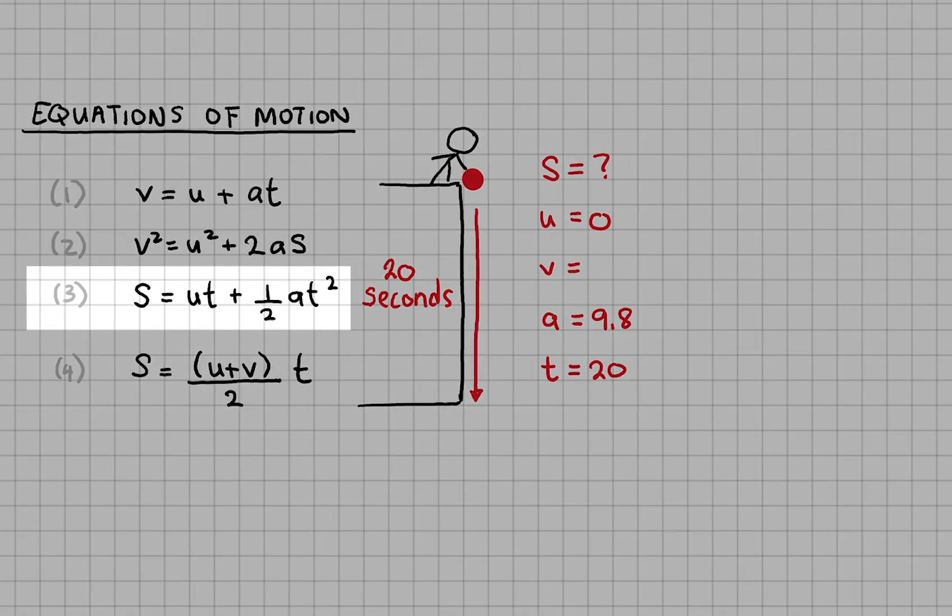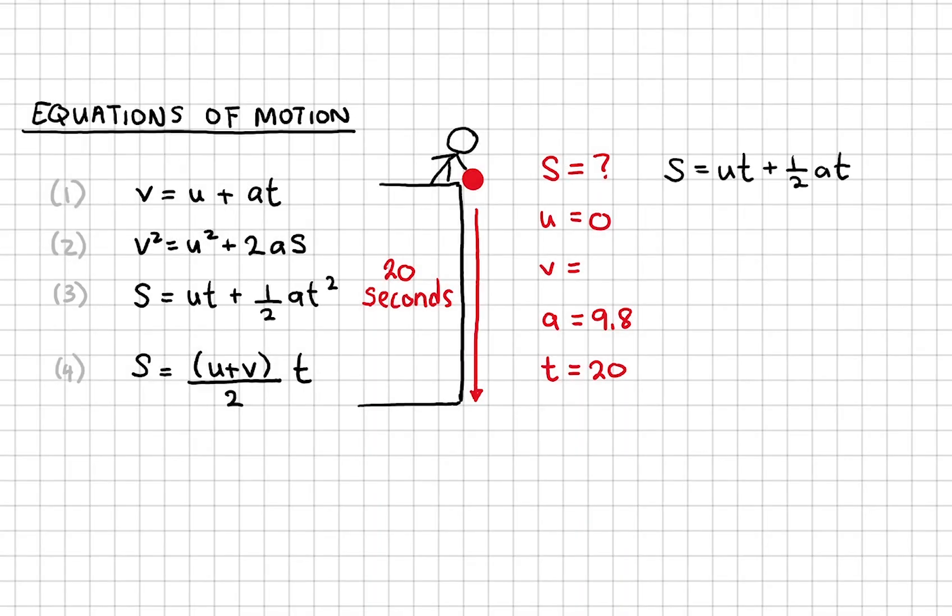I can use the third equation: S is UT plus half AT squared. This becomes 0 because U is 0. So S is half times 9.8 times 20 squared, giving us a height of 1960 meters.